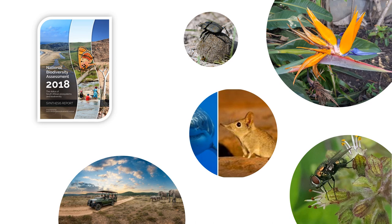The National Biodiversity Assessment, NBA, is South Africa's primary tool for monitoring and reporting on the state of biodiversity by making the science available in a suitable form that can be used by both government and civil society. The NBA recognizes taxonomic groups that are in rapid decline, in need of conservation interventions, and where conservation actions have resulted in the improvement of threat status in taxonomic groups over time.